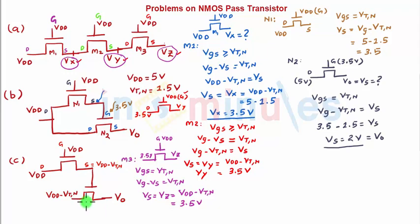Let's call this transistor X1 and analyze it. Transistor X1 has gate voltage of VDD minus VTN which is 3.5 volts, and drain voltage is also given to be VDD minus VTN, that is 3.5 volts again, and we need to find this output voltage.